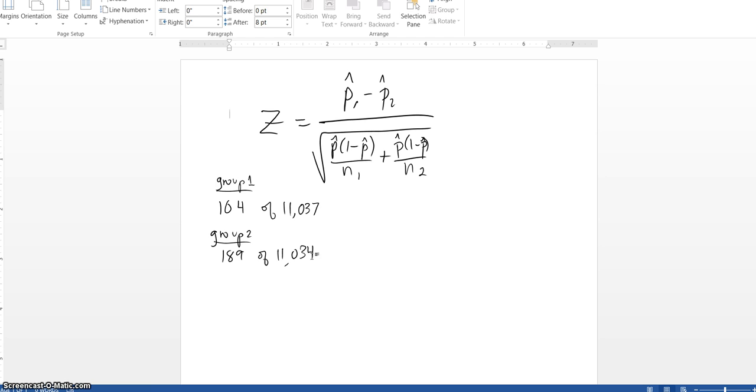It's going to take the form P1 hat minus P2 hat. That's my difference in sample proportions, divided by the standard error, which is the square root of P hat times 1 minus P hat over N1 plus P hat times 1 minus P hat over N2. And P hat is going to be the pooled estimate of the proportion of all men who would have heart attacks.